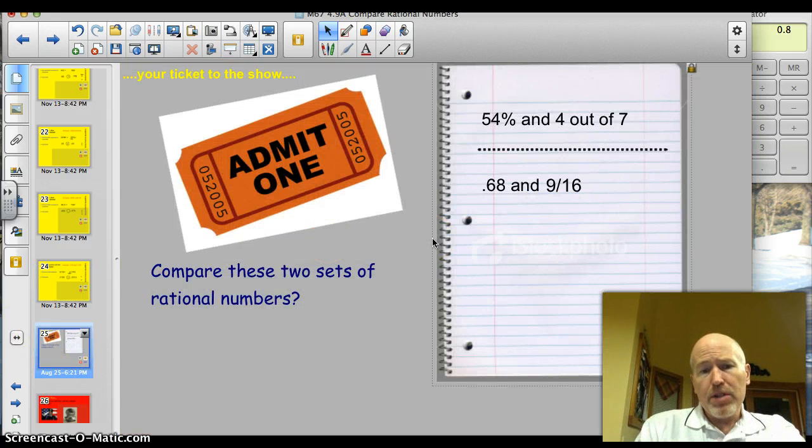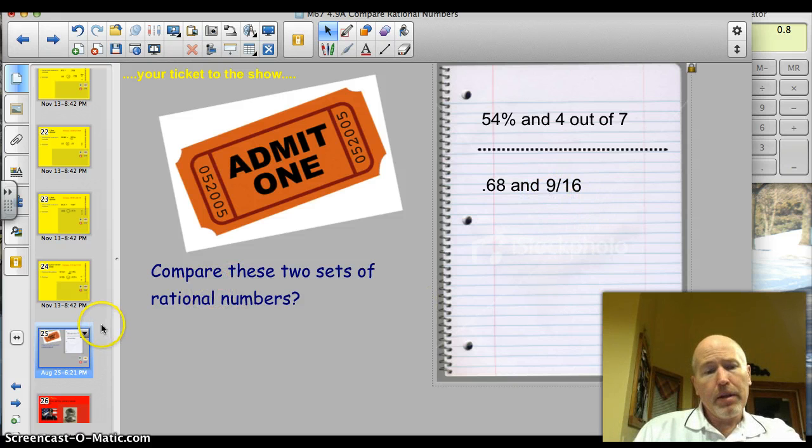All right. I think you're ready for the ticket to the show. Here we go. Compare these two sets of rational numbers. We've got 54% and 4 out of 7. And you've got 0.68 and 9 sixteenths. Okie dokie.